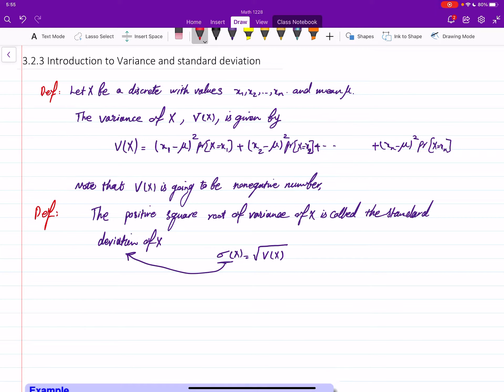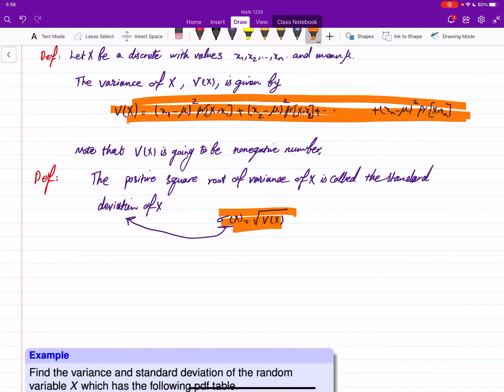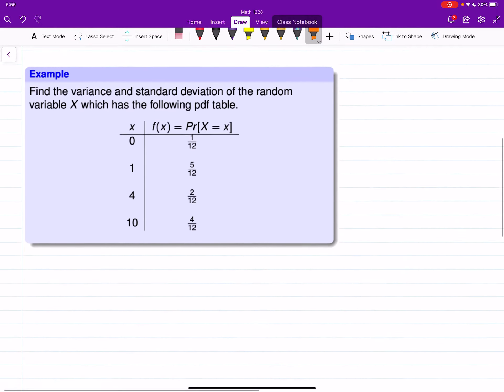You may ask when I take square root, should I take the positive or negative? This is only for positive square root, so this is the definition for standard deviation. What is the importance of variance? Variance basically shows us how spread out our values are. If the values of X are very spread out away from μ, you get a higher variance.